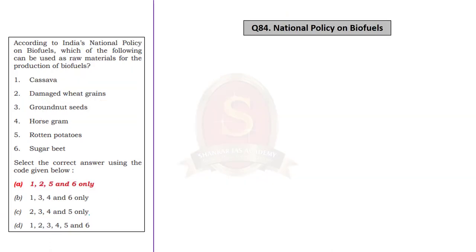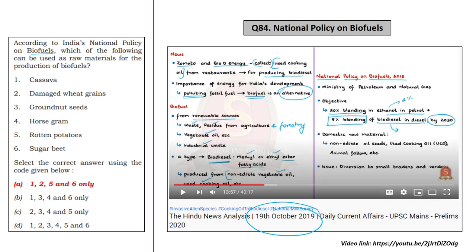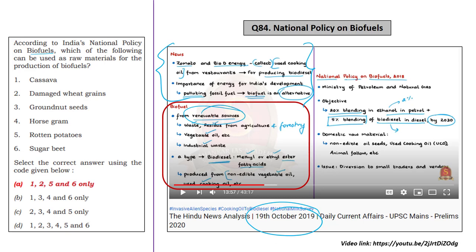Question 84 talks about the national policy on biofuels. We discussed this on 19th October 2019, in the context of a joint collaboration between Zomato and a biodiesel manufacturer. We clearly mentioned that biofuels are fuels produced from renewable resources such as wastes and residues from agriculture and forestry, vegetable oil and other edible oils, and the biodegradable fraction of industrial and municipal wastes. If you know this, you can eliminate groundnut seeds and horse gram because they do not fit in the category of wastes and residues from agriculture and forestry, nor are they vegetable oil or non-edible oils. If you know groundnut seeds should not be in the answer, you can easily arrive at the correct answer, Option A — 1, 2, 5, and 6 only.